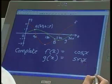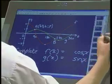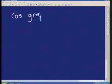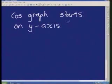Okay, so that's another general rule. Let's quickly write up a general rule. Cos graph starts on y-axis but not zero zero.